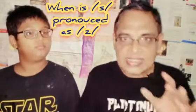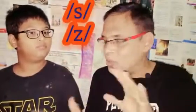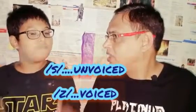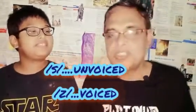S and Z are both sibilant or fricative consonant sounds. The only difference is Z is voiced — Z — and S is unvoiced. The sound of the S is S.